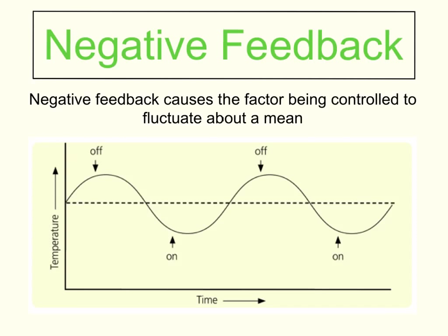I've got a graph here with temperature against time. Imagine you preset your oven to 180 degrees Celsius to bake a cake. The oven turns on, heats up, and the temperature rises. This dotted line represents 180 degrees Celsius. The oven will actually heat up above 180 degrees Celsius, but when it gets too high it switches off. Then over time the temperature decreases. When it decreases too far below 180 degrees Celsius, it switches back on and starts to heat up again. It keeps switching on and off, fluctuating about a mean of 180 degrees.